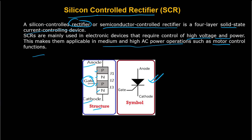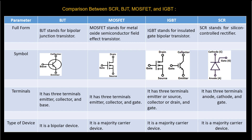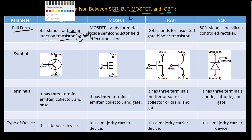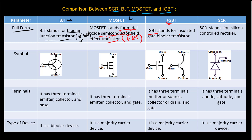Now let's see the comparison between BJT, MOSFET, IGBT, and SCR. BJT stands for Bipolar Junction Transistor. MOSFET stands for Metal Oxide Semiconductor Field Effect Transistor, which is a kind of FET. IGBT stands for Insulated Gate Bipolar Transistor. And SCR stands for Silicon Controlled Rectifier.